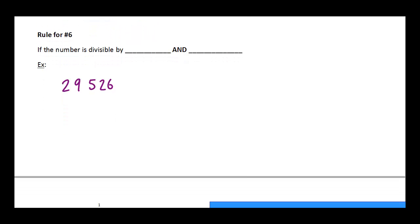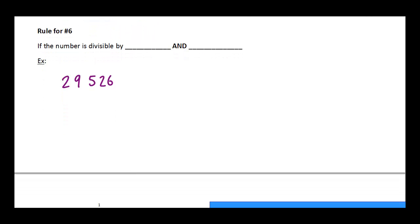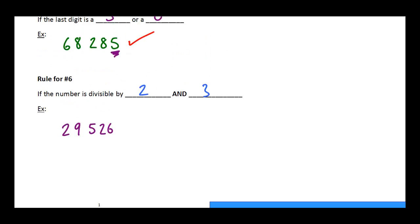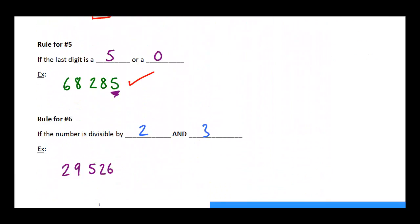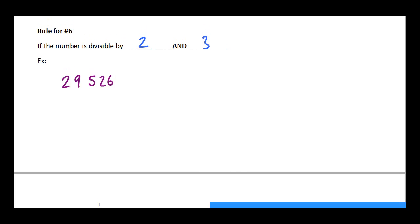Number 6 is a little bit of a tricky one, and it's a combination. So what we have to check for is to see if the number is divisible by both 2 and 3. Then we know that this number is divisible by 6. So 29,526, just remember to go back up to your other rules here, look at your rules for 2 and your rules for 3, and see if they both work out.